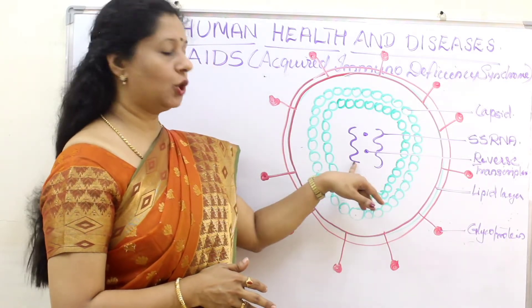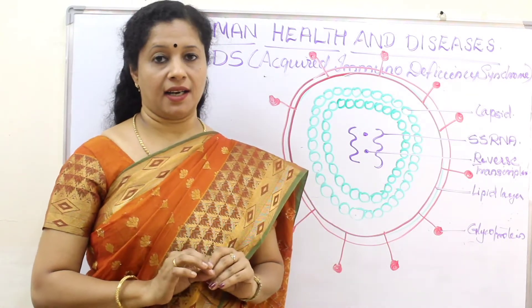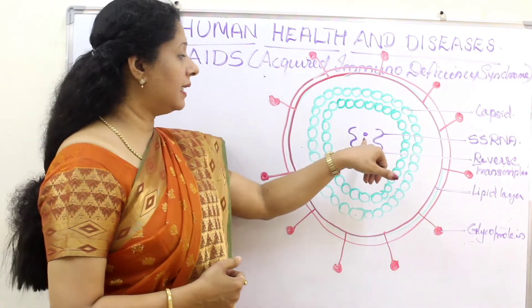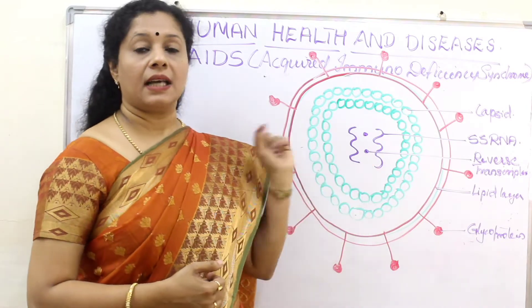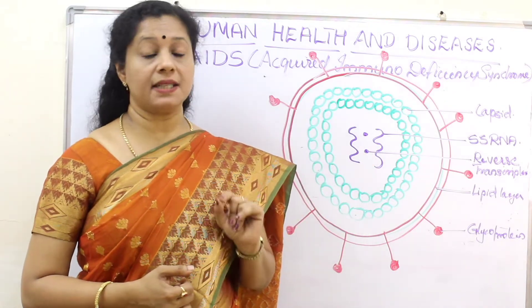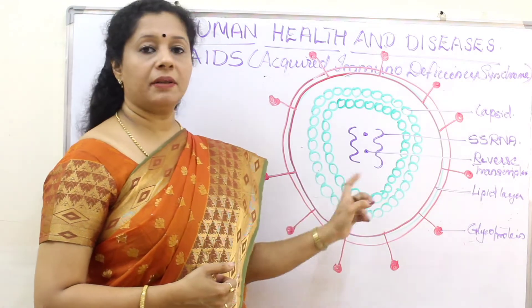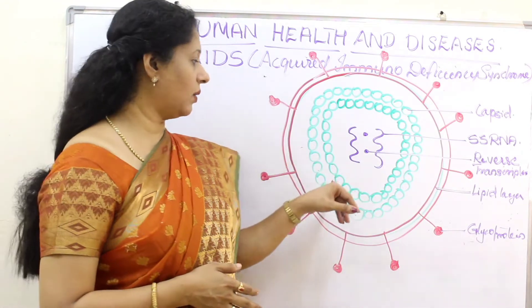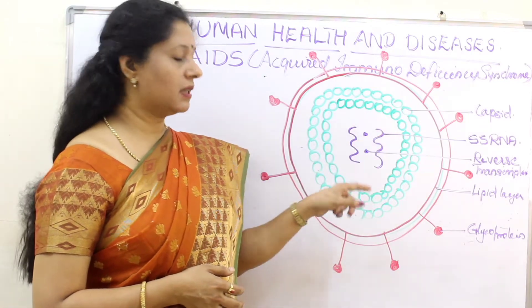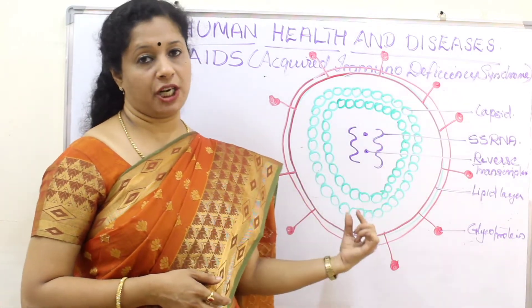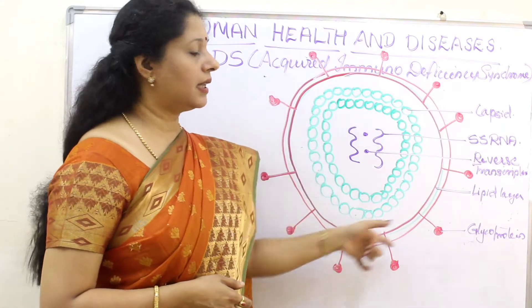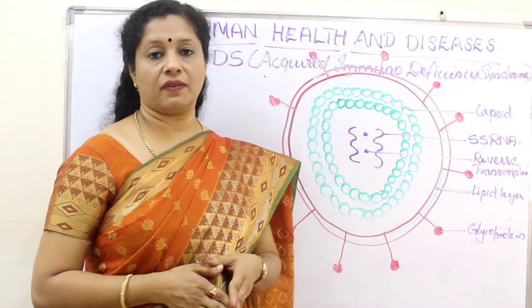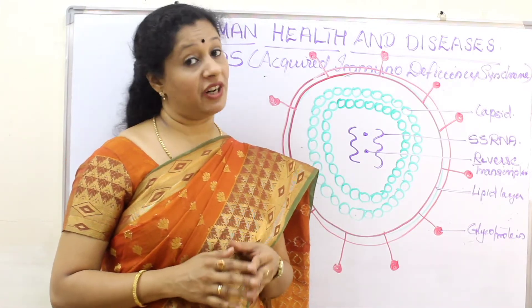In the center, HIV has two single-stranded RNA. These single-stranded RNAs are required for making double-stranded DNA. Then there is the enzyme reverse transcriptase. Apart from the genetic material, viruses have a protein coat called a capsid with individual capsomeres. It is bullet-shaped. Outer to that, there is a lipid bilayer with glycoproteins. So this is the structure of HIV, the Human Immunodeficiency Virus.